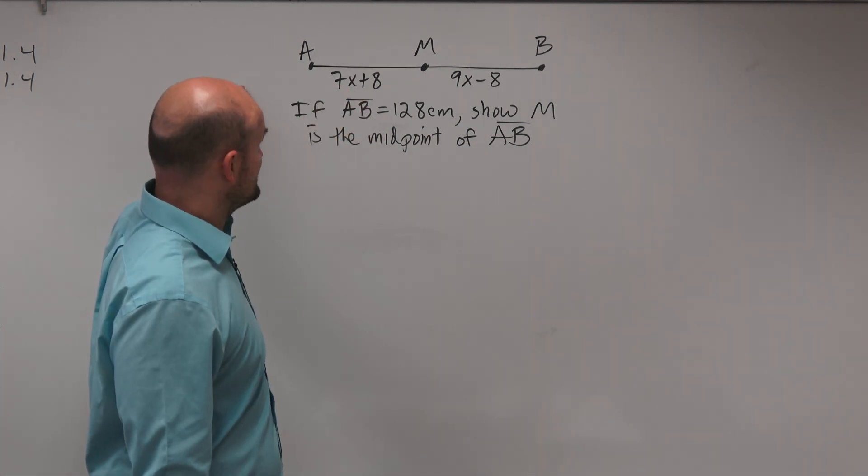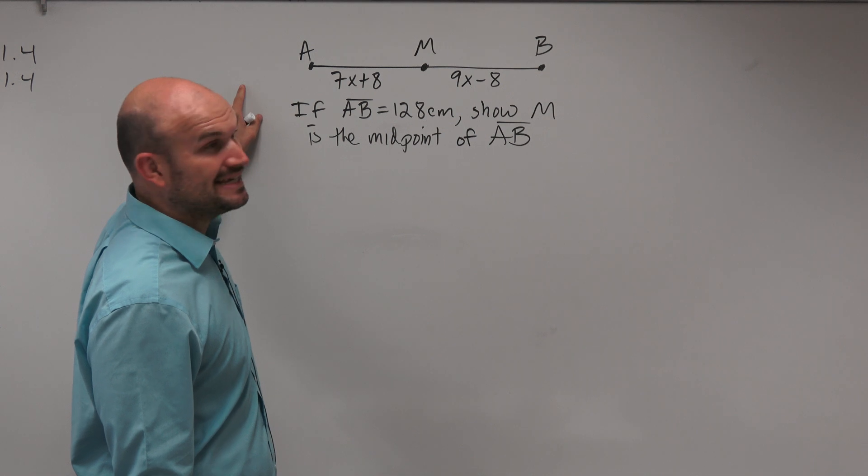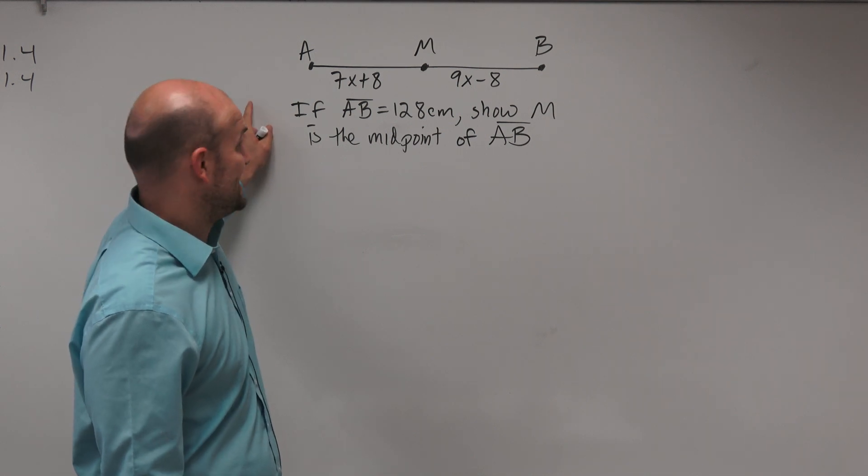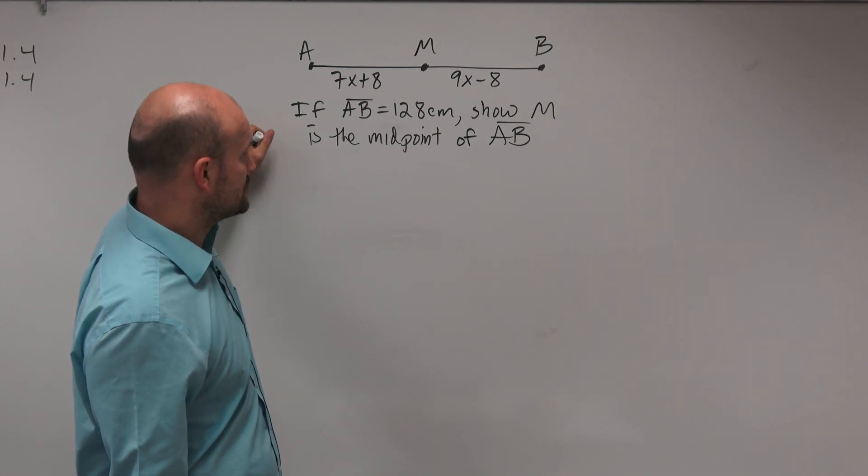We have two expressions. From A to M is 7x plus 8, and from M to B is 9x minus 8. It says if AB is 128 centimeters, show M is the midpoint of AB.